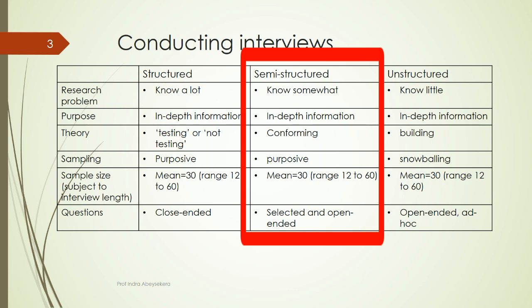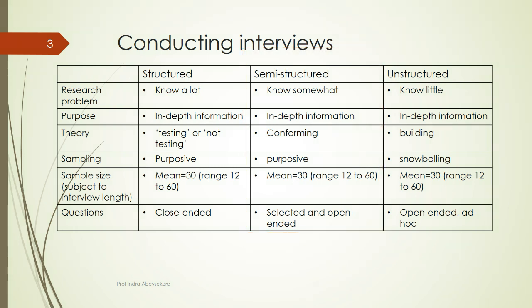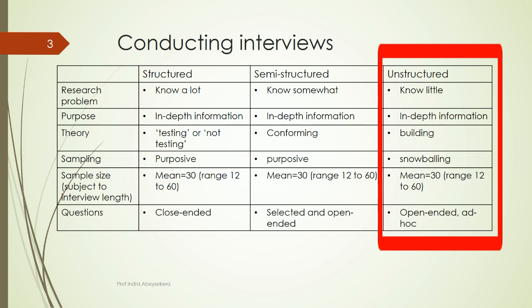From the selected questions, we ask probing questions relating to that selected question. The unstructured approach is where little is known about the research problem, and the purpose is to obtain more in-depth information in order to build a theory. Because we know little about it, we use snowball sampling — that is, we try to find who knows about it, and then from that we create another lead, and so forth. The mean sample size is about 30 but depends on the study. The questions in the unstructured approach are open-ended and ad hoc, because little is known about the research problem.